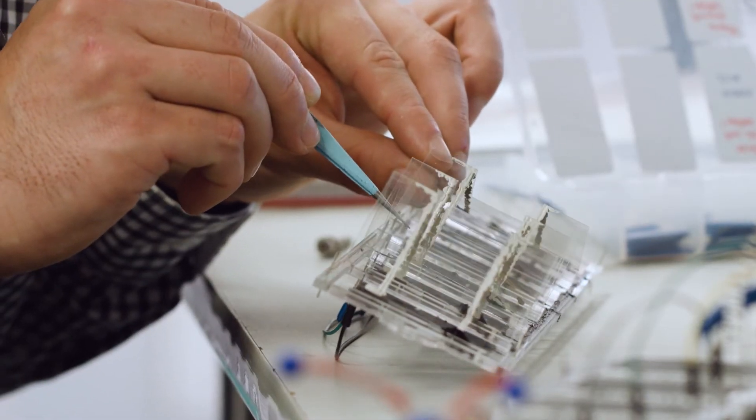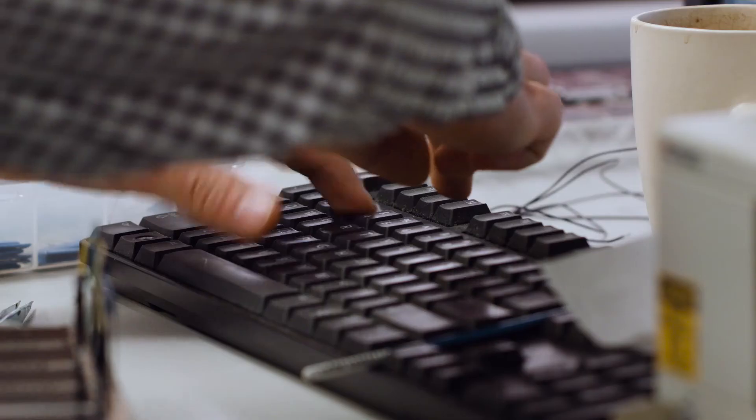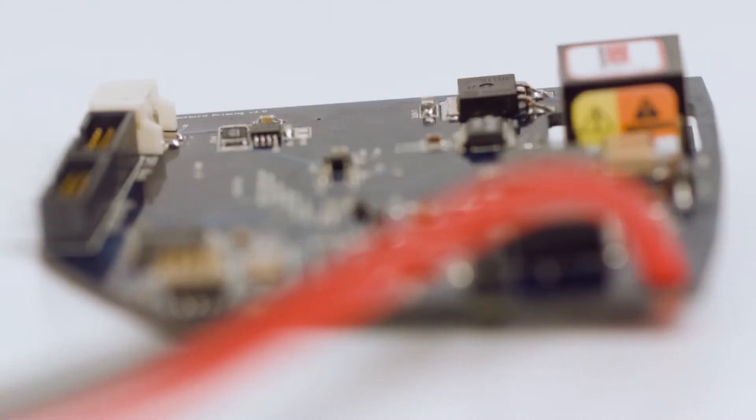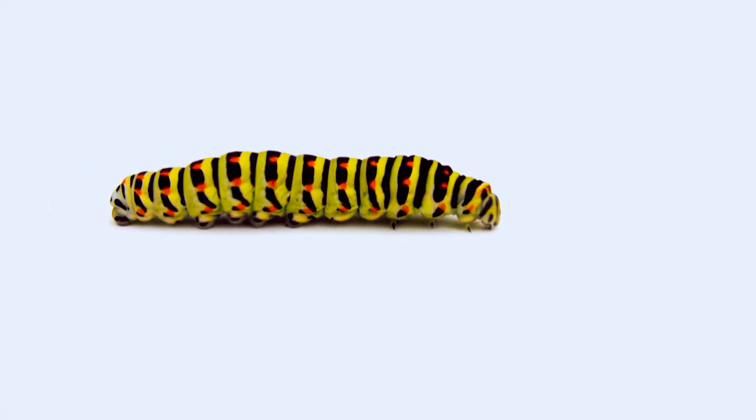To see why an artificial muscle is different, think about most of the devices and appliances that you use. They're hard and stiff. The technical world is built around hard, whereas the biological world is soft and flexible.